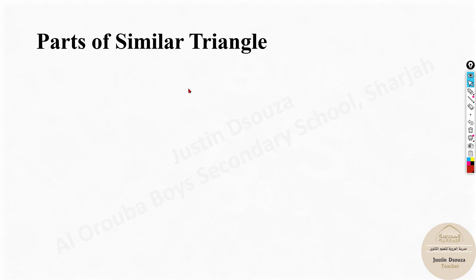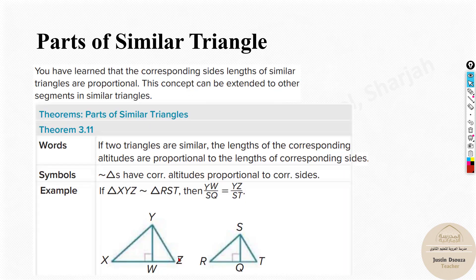Now we will look into a few theorems. Here is the first theorem, 3.11. We can see there are two triangles, and there's a straight line YW and SQ. This is a straight line because it's at a right angle — 90 degrees — a height line. Height is given as 90 degrees.